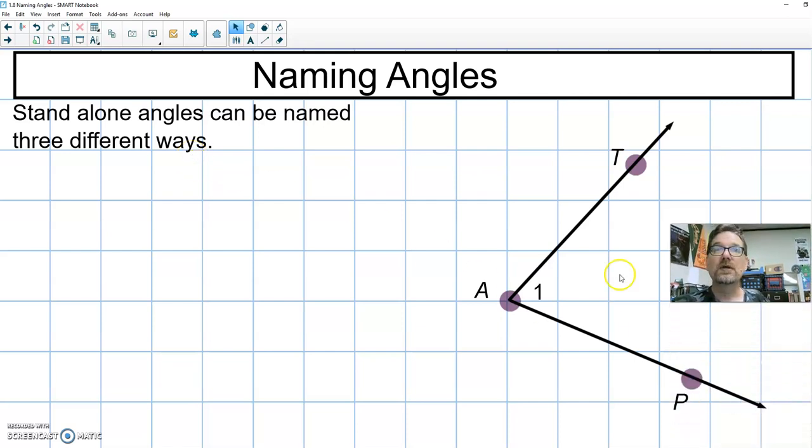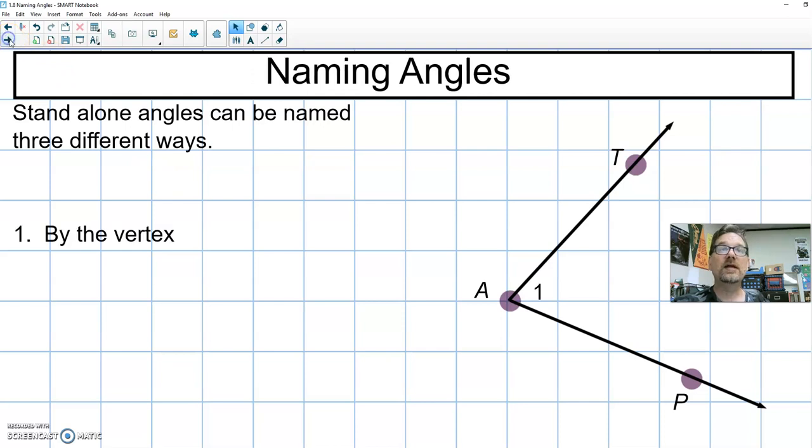So let me move my picture. There we go. So we can name that angle, as you see on your notes, by the vertex. So the vertex is the point where this angle turns around. If we trace our angle, this middle point where these two rays join is the vertex. So I could call this angle A. This could be named angle A. A is the vertex. That is the point of the vertex. We could call it angle A.